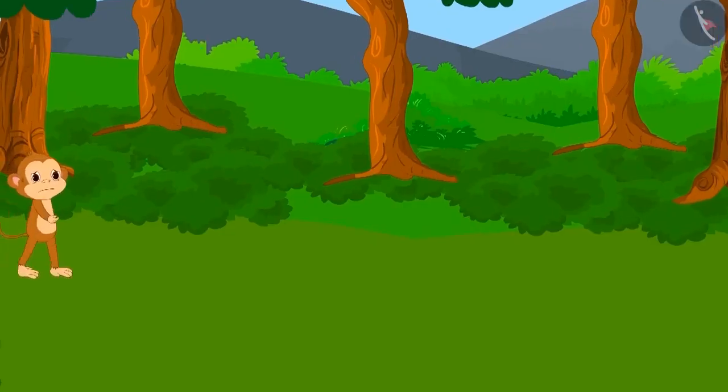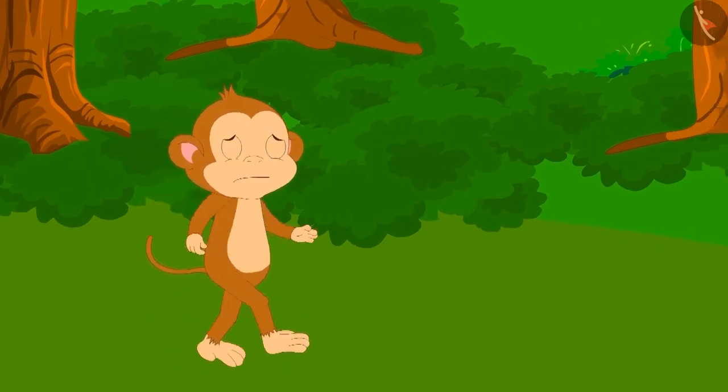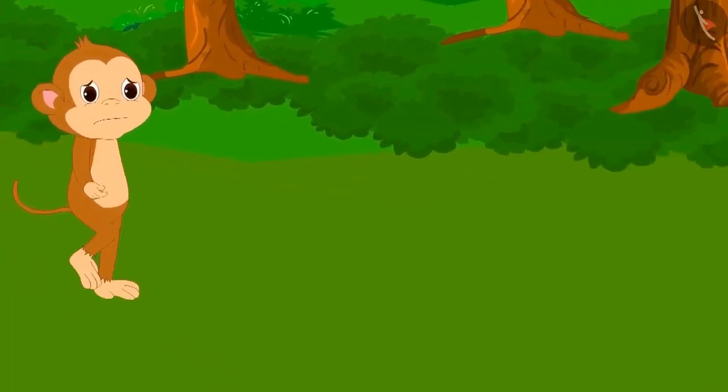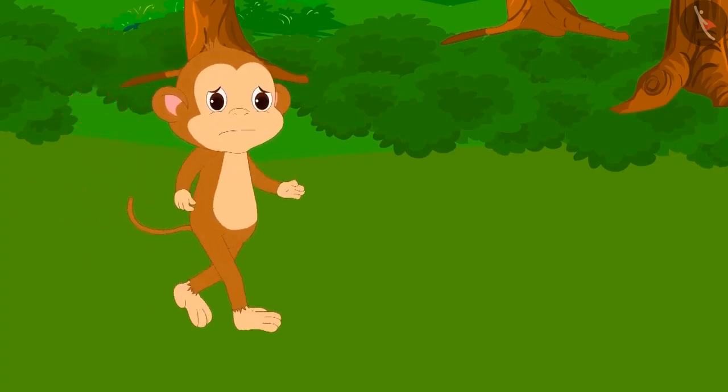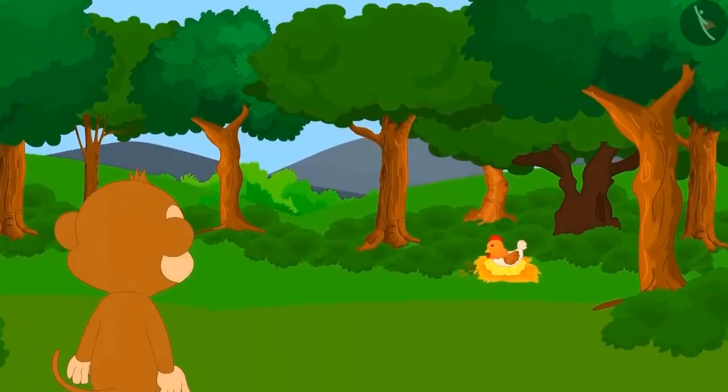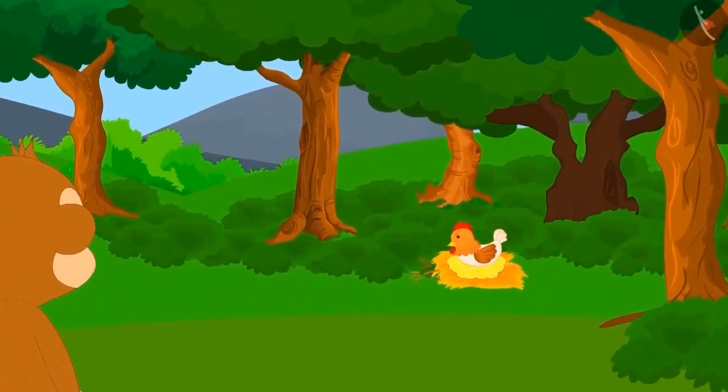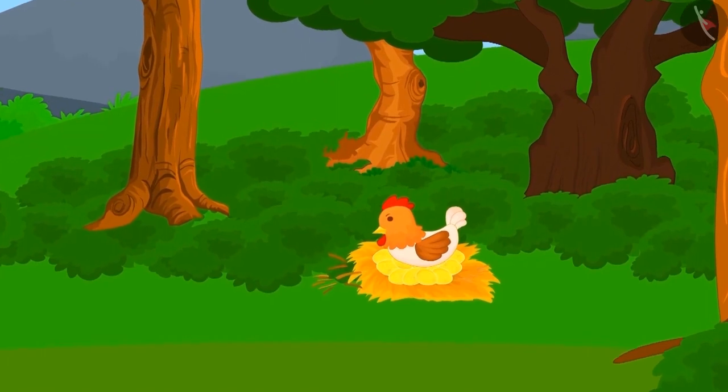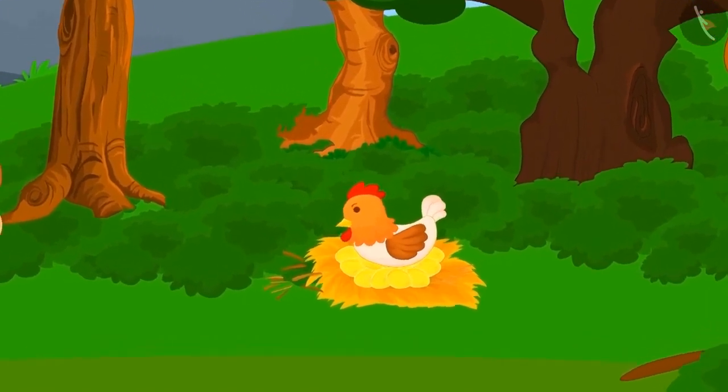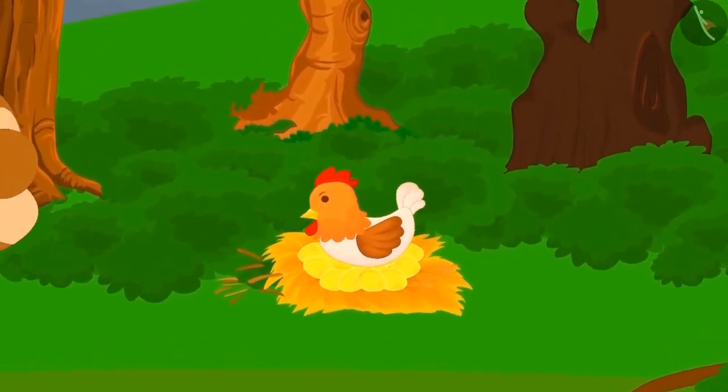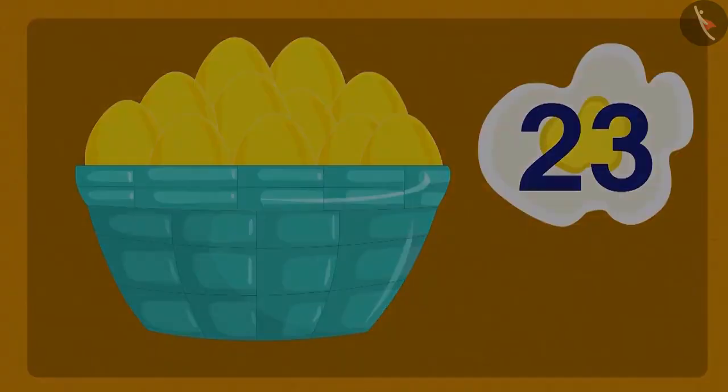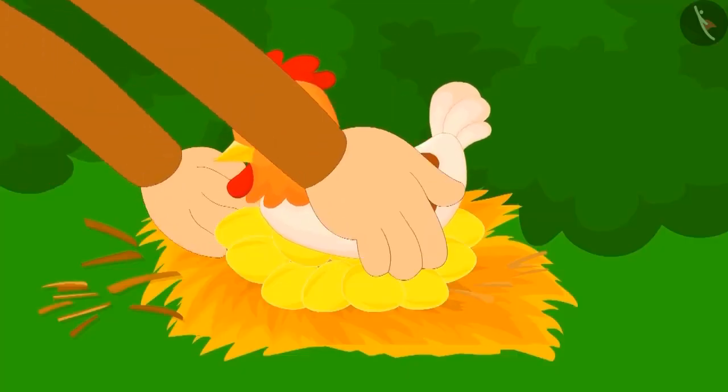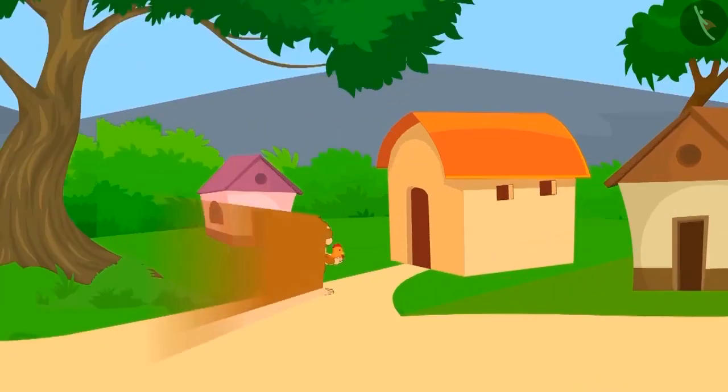One day, Babban was wandering in the forest and regretting how he lost all the three wishes he had got from the genie. Then he saw a hen there but there was something special about this hen. She was sitting on a pile of golden eggs. There were a total of 23 golden eggs. Babban was very happy and he took the hen and all the golden eggs and went home happily.